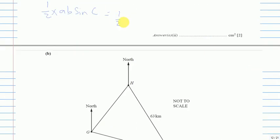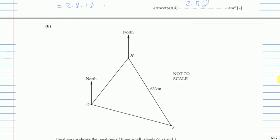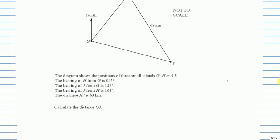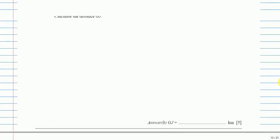Substituting the values: Area = ½ × 8.4 × 7.6 × sin(62°), and you get 28.18.